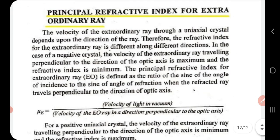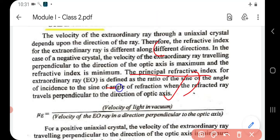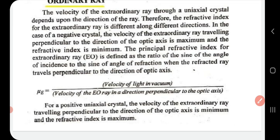The principal refractive index for the extraordinary ray is defined as the ratio of the sine of the angle of incidence to the sine of the angle of refraction when the refracted ray travels perpendicular to the direction of the optic axis. Refractive index of the extraordinary ray equals the velocity of light in vacuum divided by the velocity of the extraordinary ray in a direction perpendicular to the optic axis. For a positive crystal, the velocity of the extraordinary ray traveling perpendicular to the optic axis is minimum, and thus the refractive index is maximum.